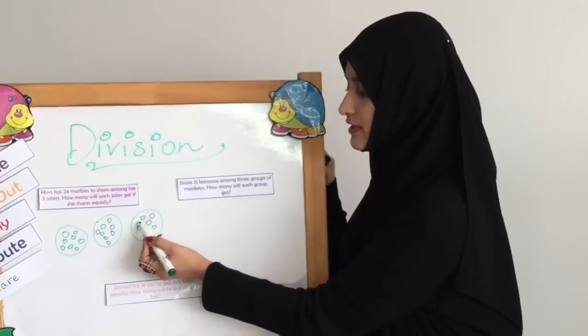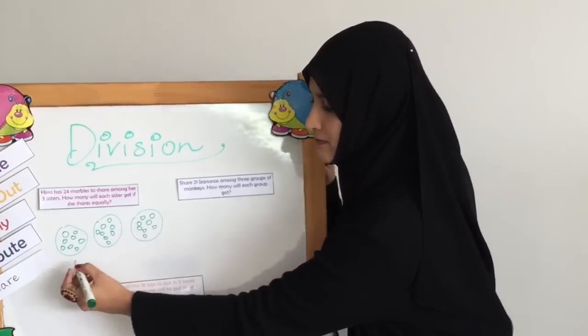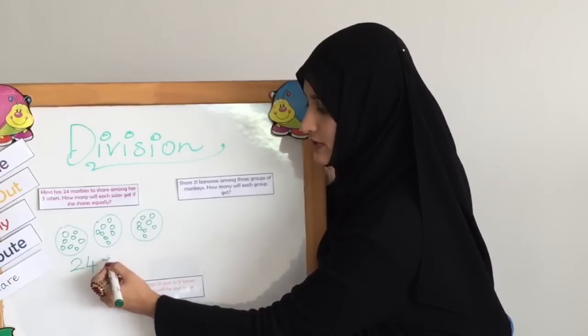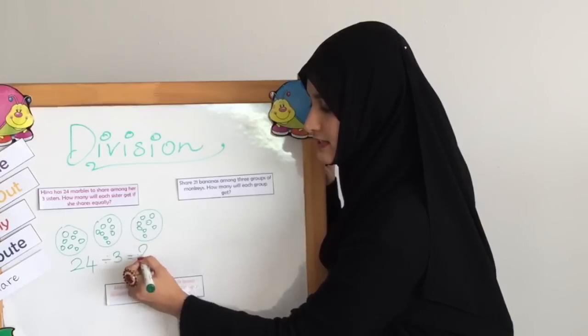One, two, three, four, five, six, seven, eight. The question was 24 divided by 3. The answer is 8.